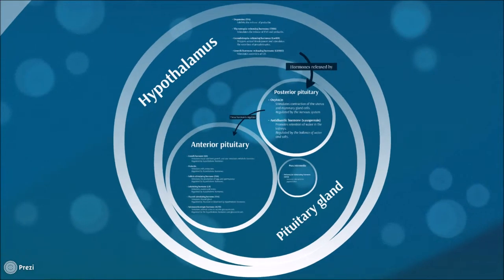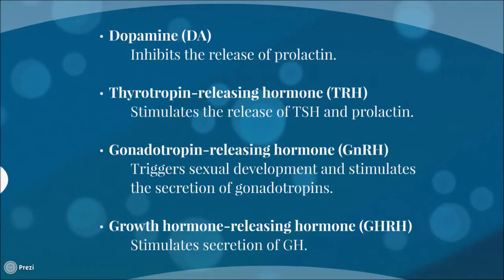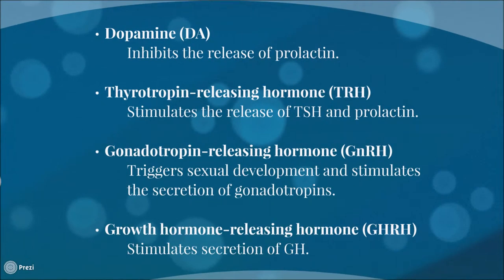The hypothalamus releases its hormones to the posterior pituitary, and some of them are in charge of the regulation of the anterior pituitary. For example, we have dopamine, which is a derivative of the amino acid tyrosine. Its principal function in the hypothalamus is to inhibit the release of prolactin from the anterior lobe of the pituitary.